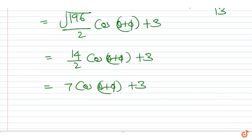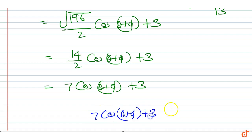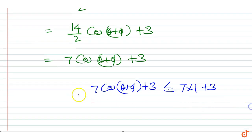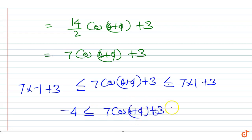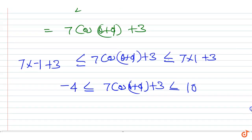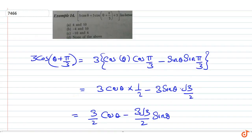The maximum value of cos(θ + φ) is 1, so this quantity 7cos(θ + φ) + 3 is less than or equal to 7×1 + 3 = 10. The minimum gives minus 4, so minus 4 ≤ 7cos(θ + φ) + 3 ≤ 10. Therefore the answer is between minus 4 and 10, so the correct option is option C.